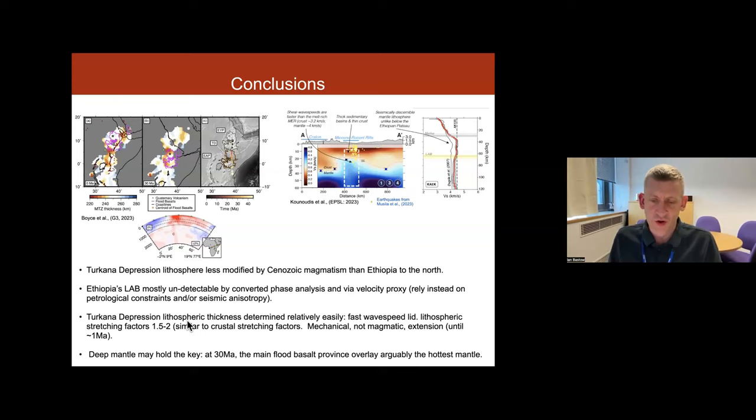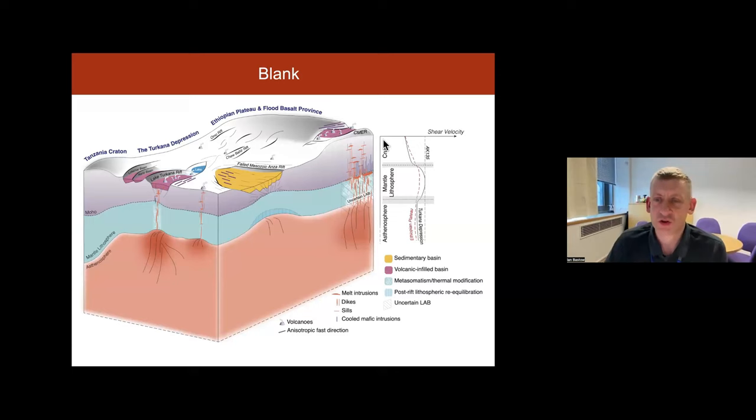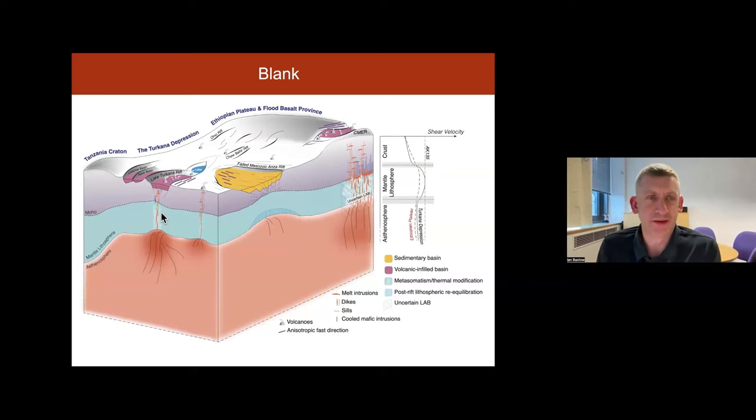And the deep mantle, if you're prepared to believe these transition zone images, may hold the key to that. So, 30 million years ago, the flood basalt province arguably overlay what we think may have been the hottest mantle. And that may, therefore, explain the marked difference in lithospheric seismic structure between the Ethiopian plateau and the rift and the Turkana Depression just a little further south. And I think I'm probably out of time, but I could leave you with a very nice summary from Rita Kanudis' PhD thesis, really trying to draw this contrast between a heavily melt-infiltrated central and northern Main Ethiopian rift with a very uncertain lithospheric asthenosphere boundary with a much more melt-poor Turkana depression further south. All right, thank you.